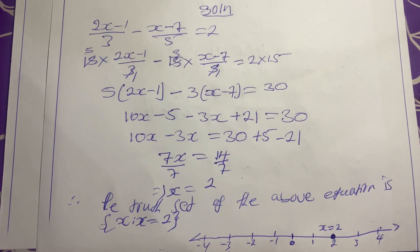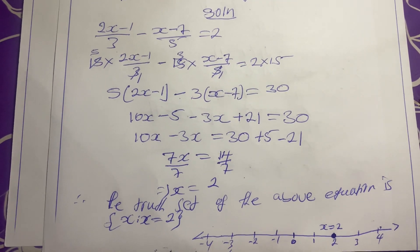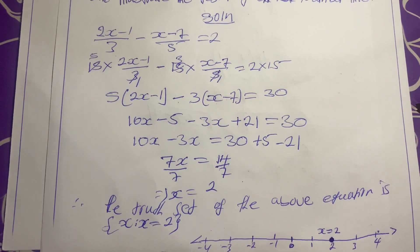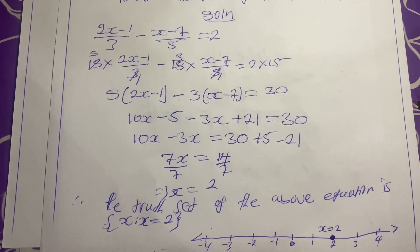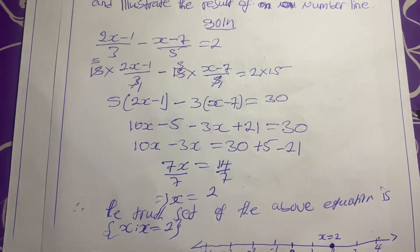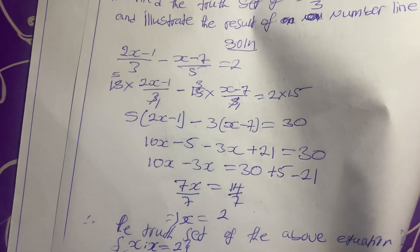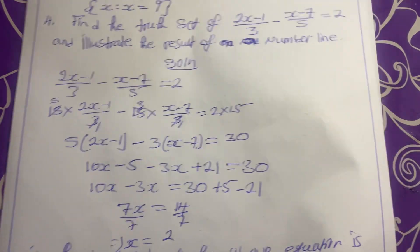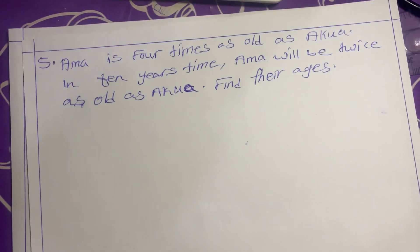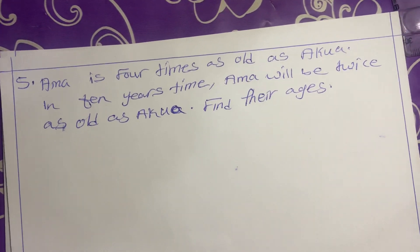When you get to inequalities, the number line will be drawn differently. For every linear equation, you just locate that number. If there are two different answers, you join them and show your answer. Our last example is example 5, a word problem.